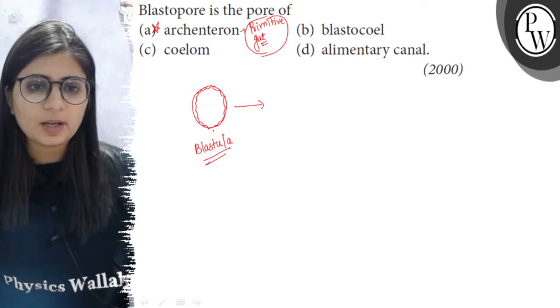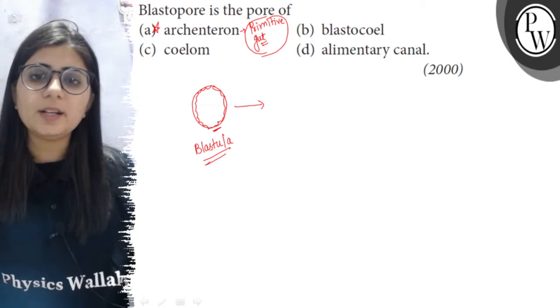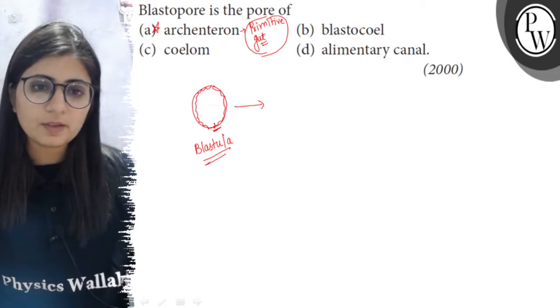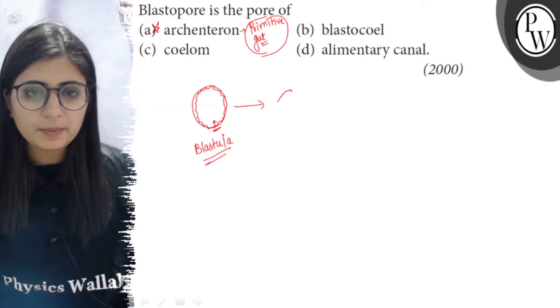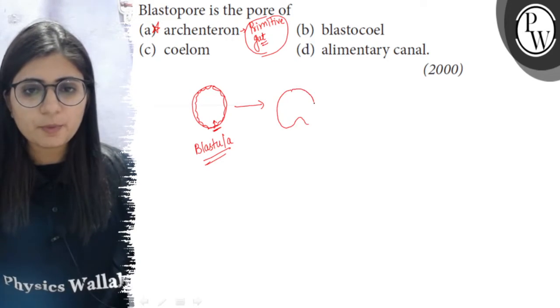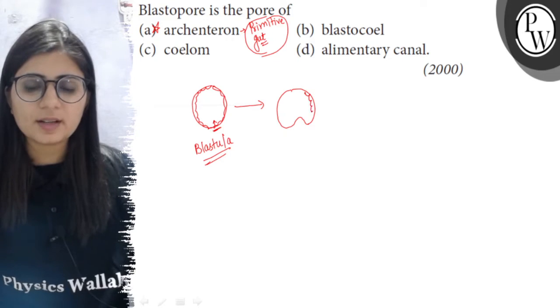From this blastula, the cells which are destined to form the endoderm will start moving. There will be created a pit here. This is the point from where the cells which are destined to form the endoderm will move.